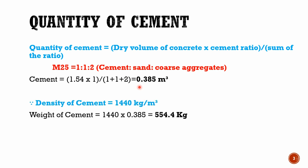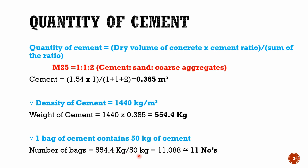Since cement is measured in terms of weight, we have to convert this volume into weight. For that, just multiply the density of cement with volume. Weight of cement equals to 1440 multiplied by 0.385, which equals 554.4 kg. Here, 1440 is the density of cement. To get the number of bags, divide the weight of cement by the weight of 1 bag. If you divide 554.4 by 50, you will get 11.088, which is approximately equal to 11 bags.